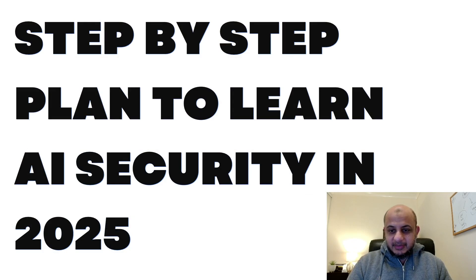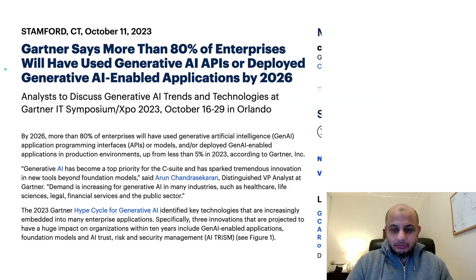A step-by-step plan to learn AI security in 2025. First of all, let's answer this question: Why? Why would you want to learn about AI security in 2025? Well, first of all, AI is going to be everywhere in 2025 and beyond. Whether you think AI is overrated or not, it does not matter. AI is going to be everywhere.